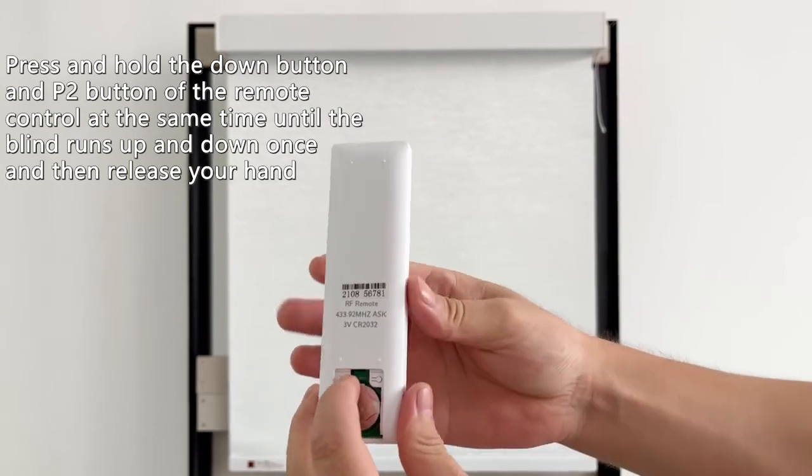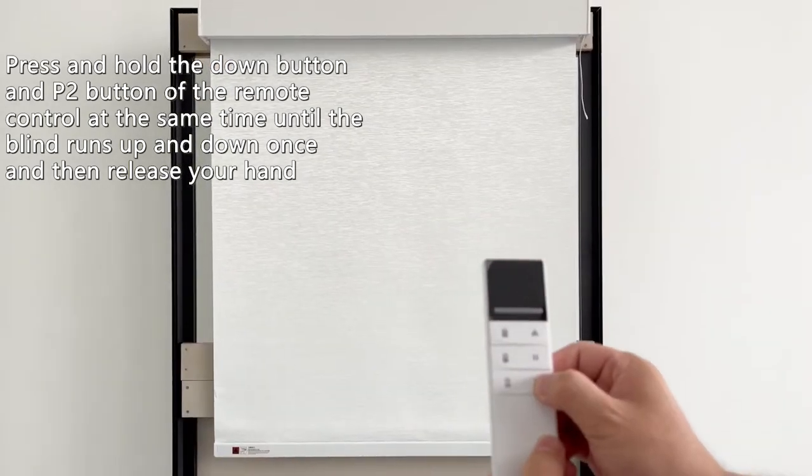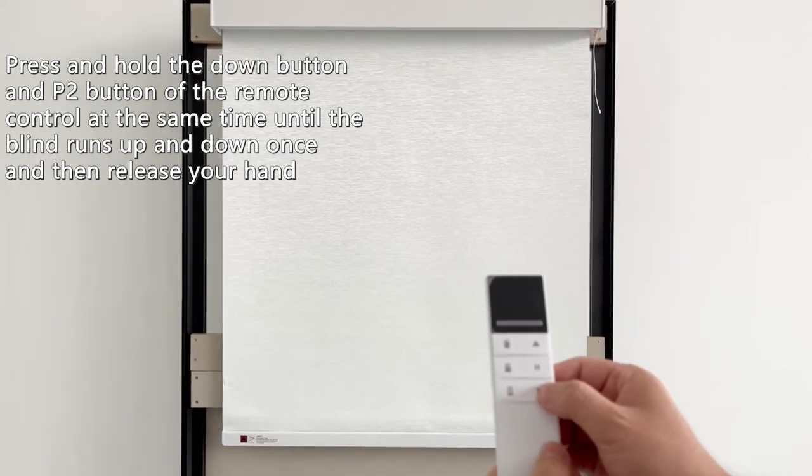Press and hold the down button and PR button of the remote control at the same time until the blind runs up and down once and then release your hand.